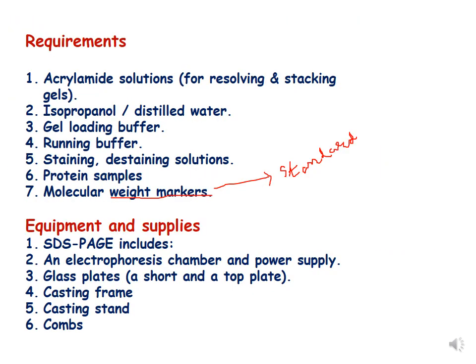The requirements for this technique include acrylamide solution for two types of gels — resolving and stacking gel — isopropanol, distilled water, gel loading buffer, running buffer, staining and destaining solutions, protein samples, and molecular weight markers (also called ladders or standard markers). The equipment used includes an electrophoresis chamber with power supply, glass plates for casting gel, casting frames, casting stand, and combs.